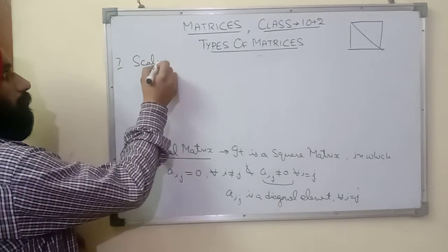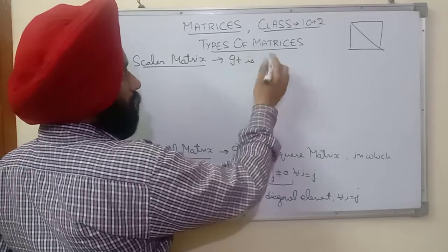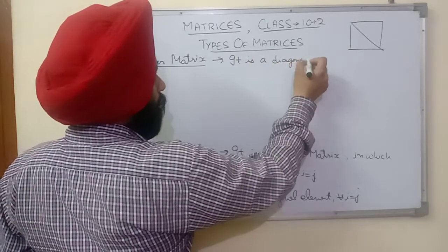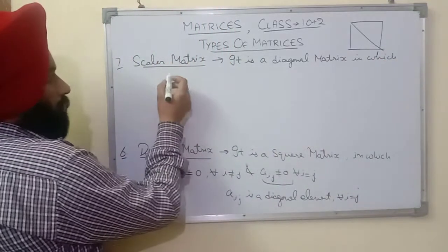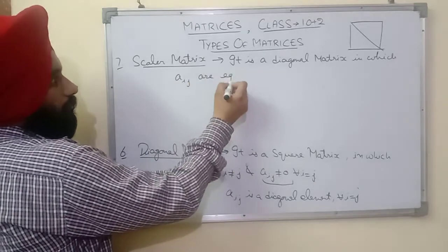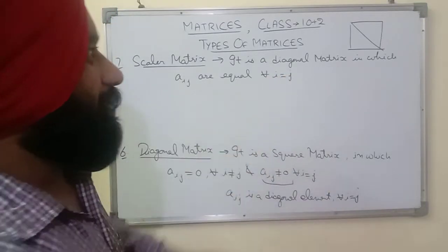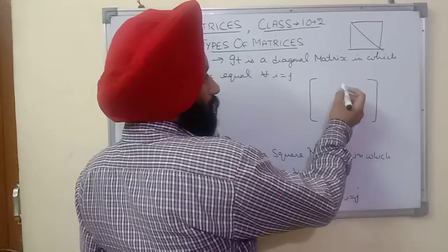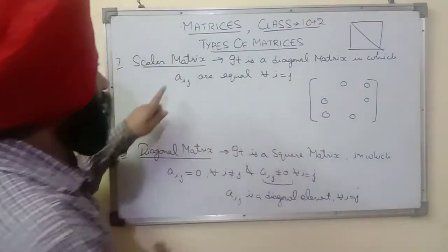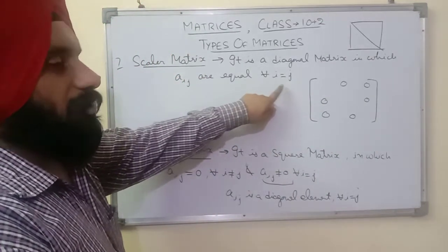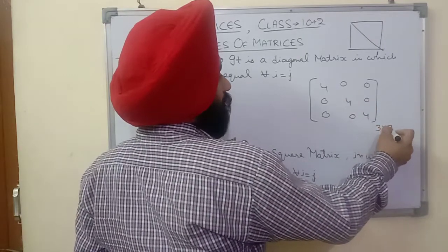Next is the scalar matrix. A scalar matrix is a type of diagonal matrix in which all diagonal elements a_ij (where i equals j) are equal to each other. Since it is a diagonal matrix, non-diagonal elements where i ≠ j are zero. The diagonal elements must all be equal — for example, 4, 4, 4. That makes it a scalar matrix.